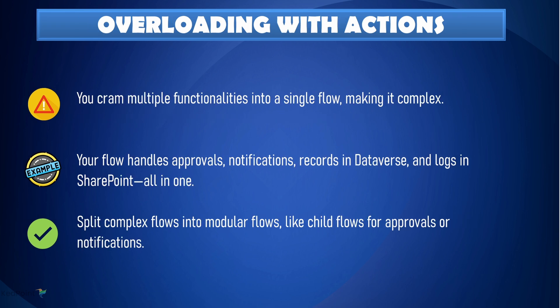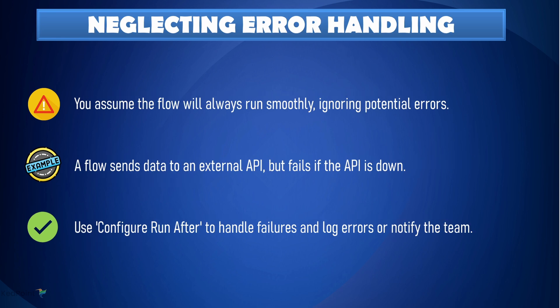Third: don't overload your flow with too many actions. If your flow is doing too much, it becomes harder to manage, slower, and more prone to errors. For example, if your flow handles approval, notification, and logging all in one, split it up. Create child flows for each task — you can have one flow just for approval and another for notifications. Breaking things down makes them easier to maintain and troubleshoot, especially when you have larger flows.